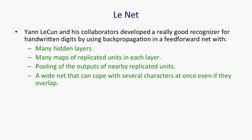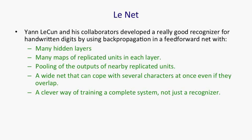And something which people often forget is that they used a clever way of training a complete system. They weren't just training a recognizer for individual characters. They were training a complete system so that you'd put in pixels at one end, and you'd get out whole zip codes at the other end. And in training that system, they used a method that would now be called maximum margin. But when they did it, it was way before maximum margin had been invented. The net they used was at one point responsible for reading about 10% of the checks in North America. So it was of great practical value.